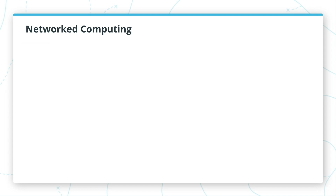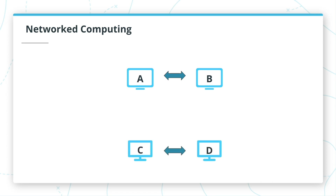Computers have been able to connect with each other over a network since the early 60s. A program on one machine would open a connection over the network to another program running on a different computer, and these two would send packets of data to each other. At first these programs were specialized and had to be designed carefully to work with each other. Just because program A and program B can talk to each other doesn't mean that program C or D can talk to either of them.